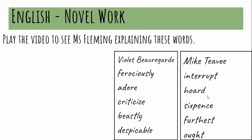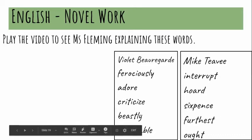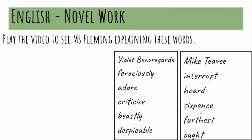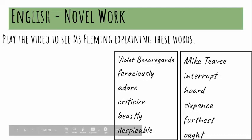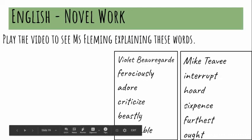'Sixpence' — this is an old type of money, an old coin that people had before euros. Before we had euros, we had punts, and in the UK they had pounds — they still have pounds now — but a sixpence is an old coin.